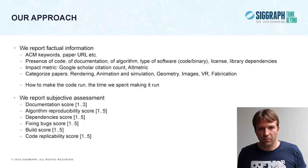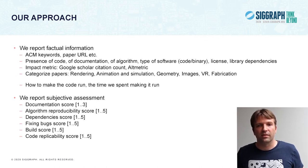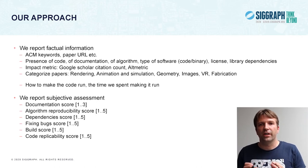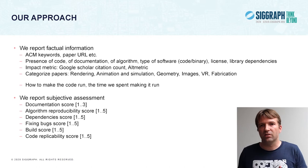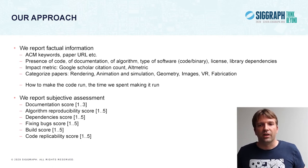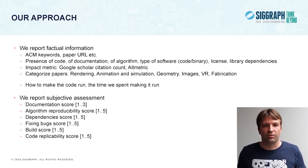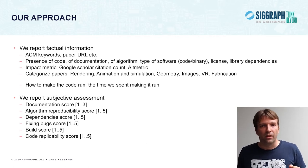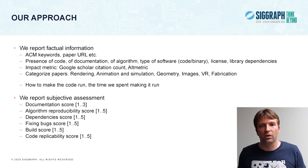We also report subjective assessment in terms of score. Notably, there's the algorithm reproducibility score, which means that if there is no code but there is a very short, self-contained algorithm or shader in the paper, it's still useful because it's almost like code. We also have the code replicability score — for example, if you add a script that produces all the results in the paper, you would get a 5. But even if you don't have the input data, if it gives something reasonable given different input data, you could still get a 5.